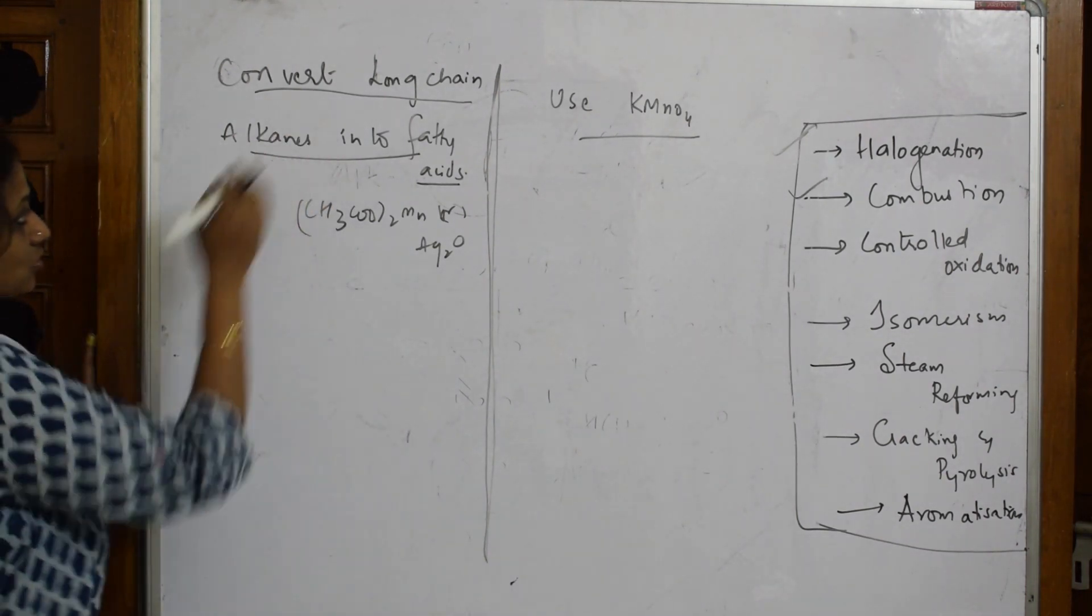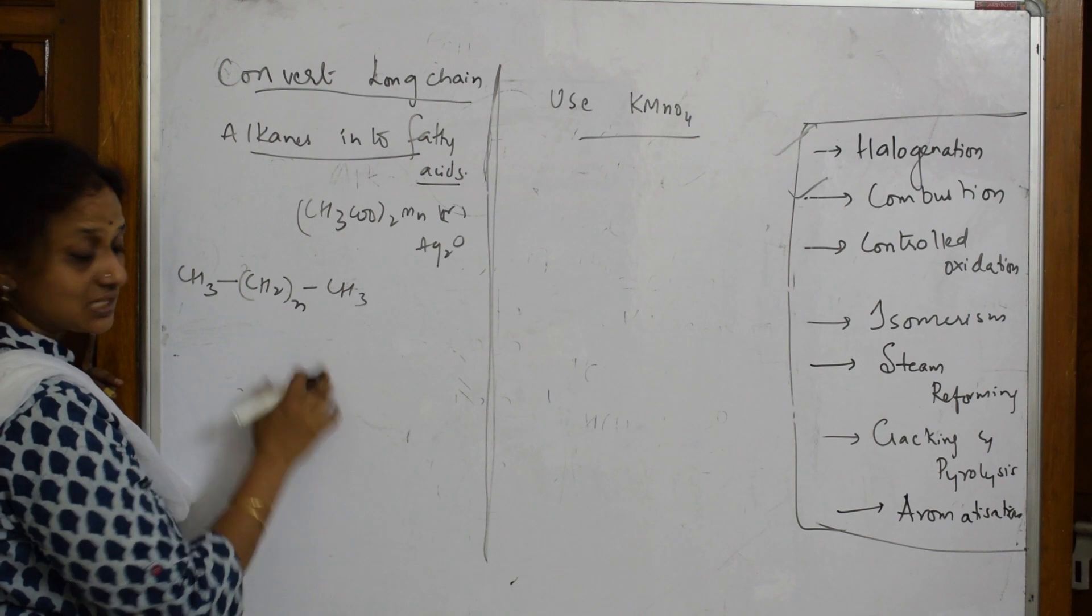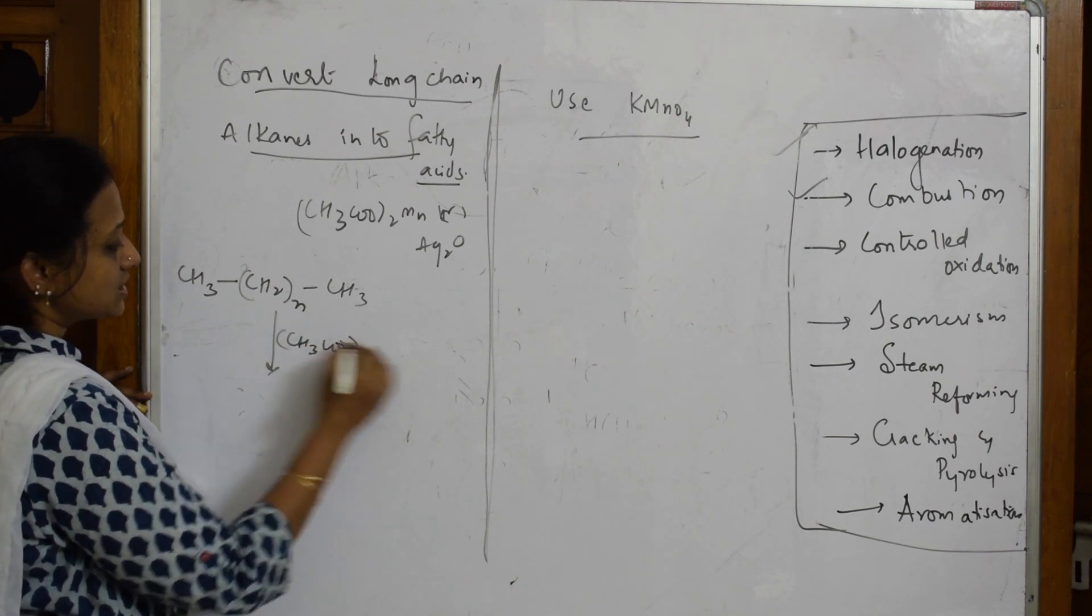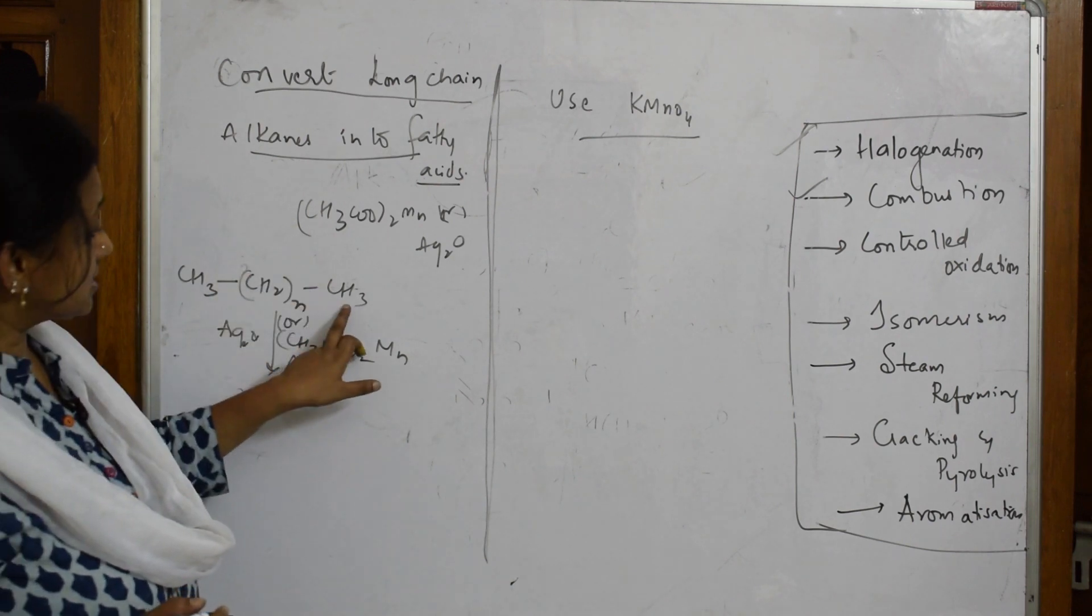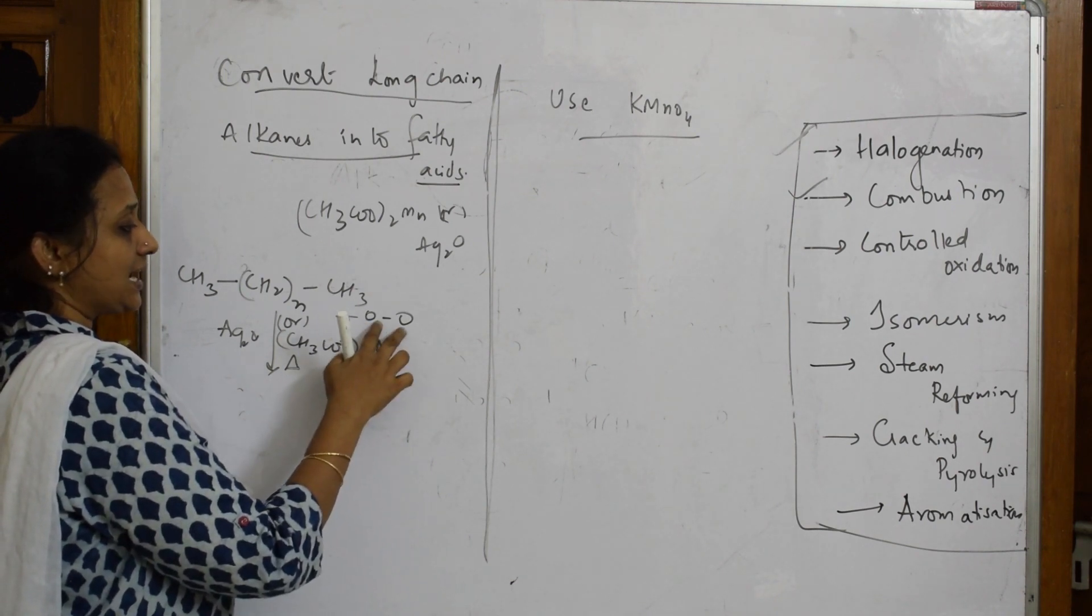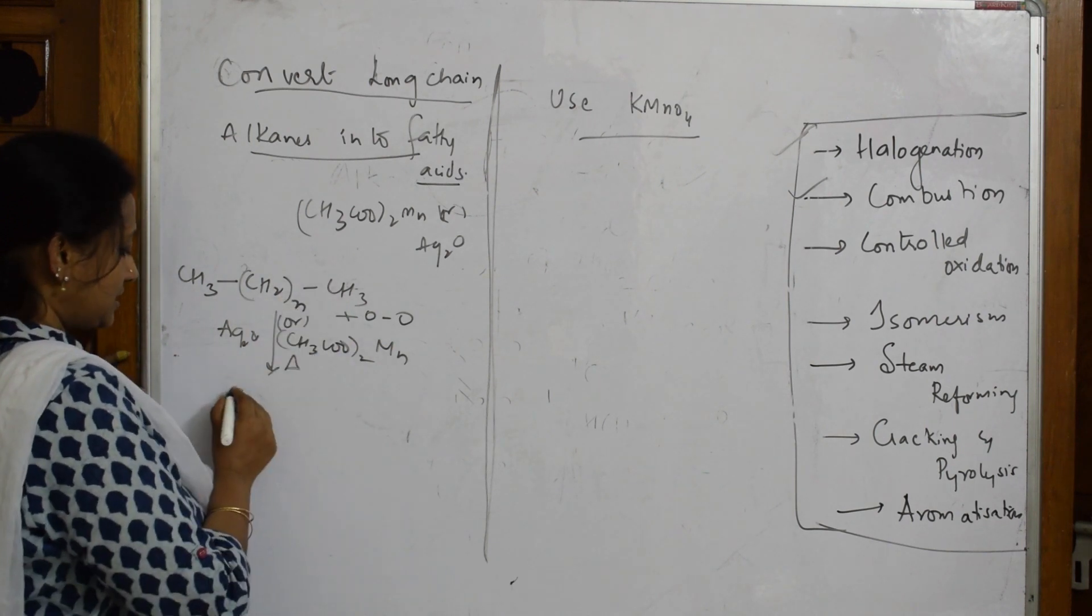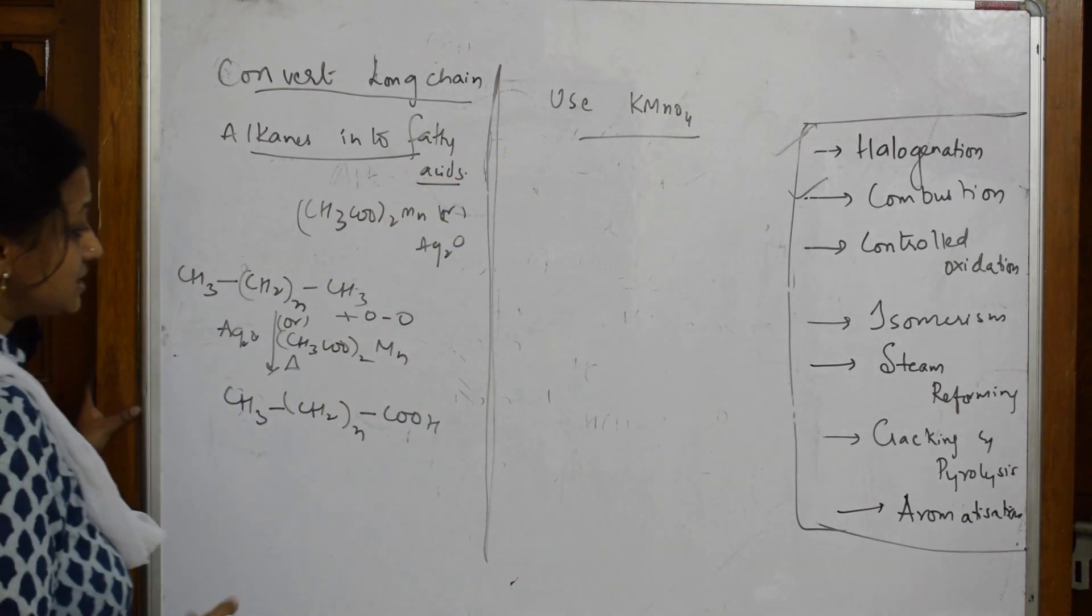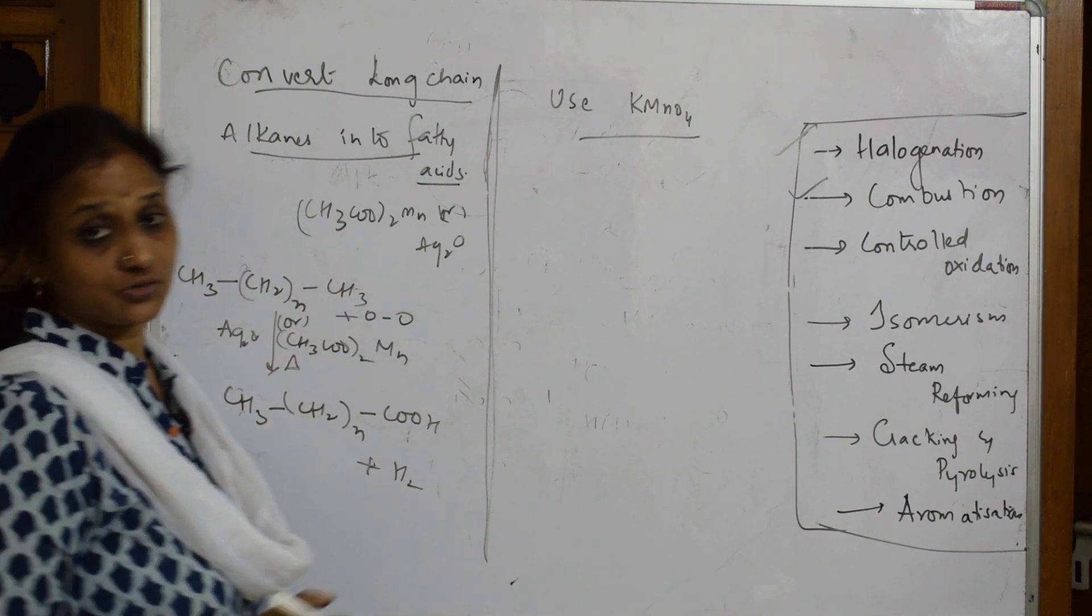Suppose if I take a long chain alkane, the chain goes on repeating. If I am using this catalyst CH3COO taken twice, manganese acetate or silver oxide and heat, then what will happen? This particular thing, there is a cleavage of the bond. We are adding oxygen. When this cleavage happens, these two will go and add here. This becomes COOH. CH3(CH2)n becomes CH3(CH2)nCOOH - fatty acids, long chain fatty acid. What is left out? There is hydrogen gas evolved.